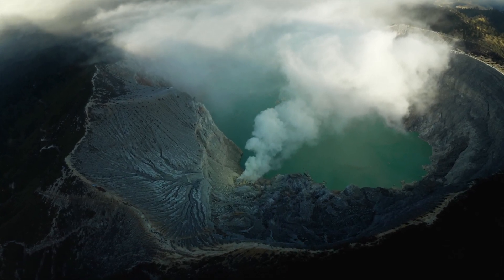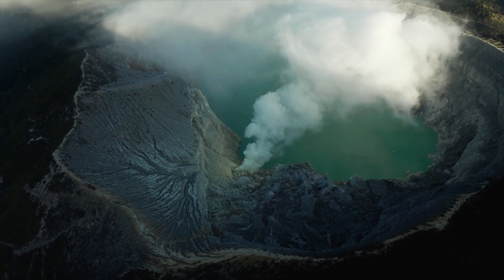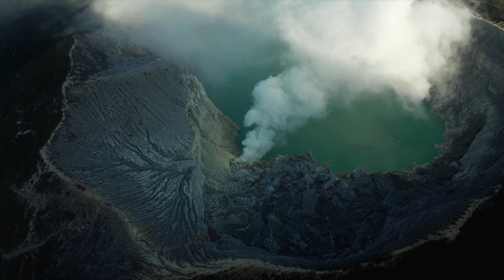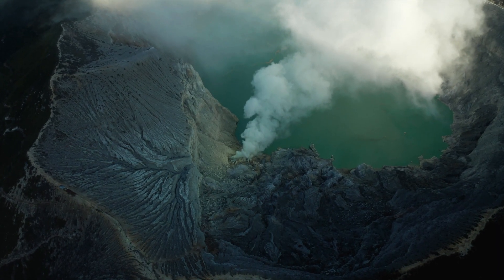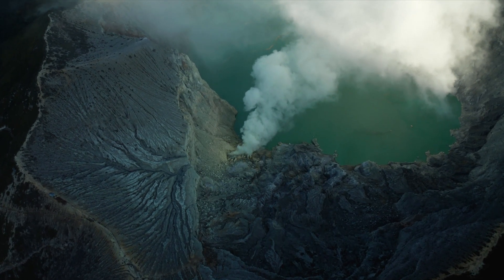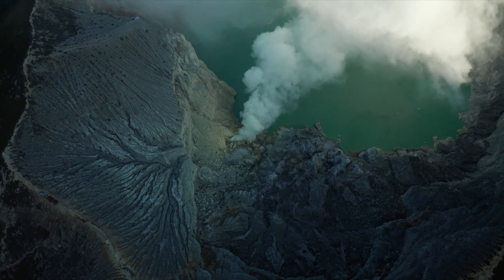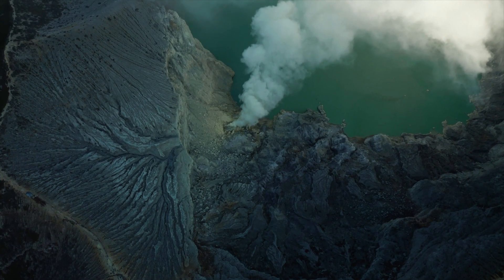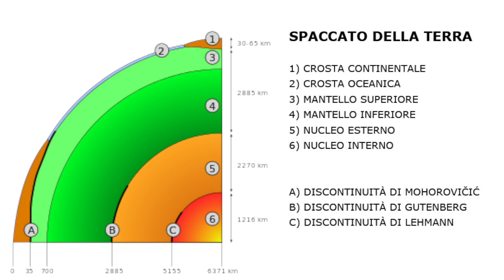Its superior limit, that is, its contact with the overlying Earth's crust, is generally located between 10 and 35 km in depth from the surface and is called the discontinuity of Mohorovičić, often abbreviated as Moho. The lower limit, which marks the boundary with the nucleus, is called the discontinuity of Gutenberg.